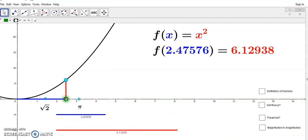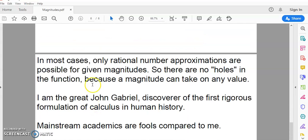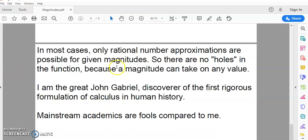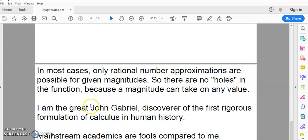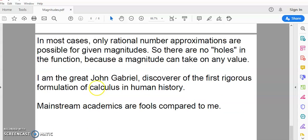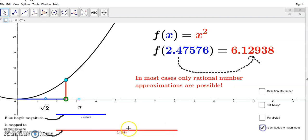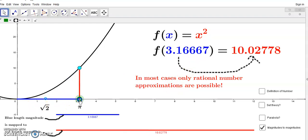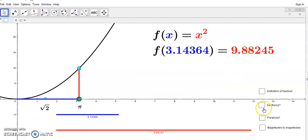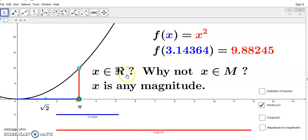So, let's bring this out of the way and continue. Now, in most cases, only rational number approximations are possible for given magnitudes. And there are no holes in the function because the magnitude can take on any value. So, if we come back here again and we look at this here, these are the magnitudes that are being mapped. The blue to the red, the blue to the red. And if I had to go over here, then I'm looking at roughly, this isn't pi, by the way. This is a very weak approximation, rational number approximation, which gives us this value here. So, what we don't do is the rot of set theory. We don't say x is an element of R because there is no R. For many reasons, there is no R.